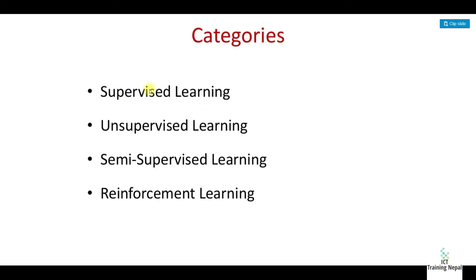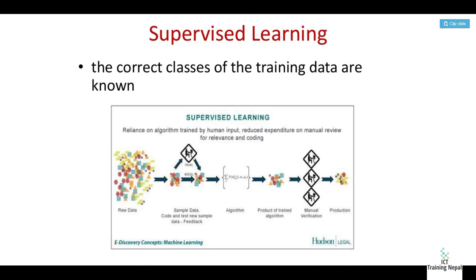The categories of machine learning are: supervised learning, unsupervised learning, semi-supervised learning, and reinforcement learning. In supervised learning, the correct classes of the training data are known. The algorithm is trained by input and reduces expenditure on manual review for relevance and coding.